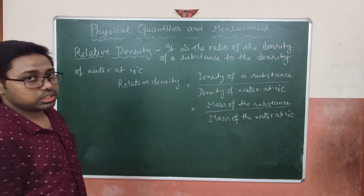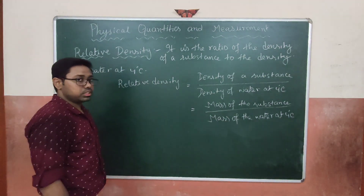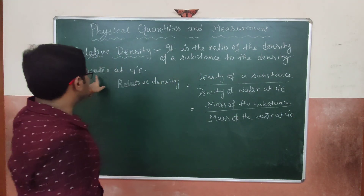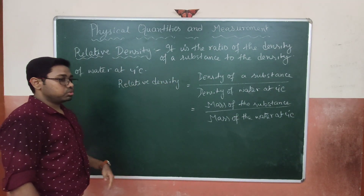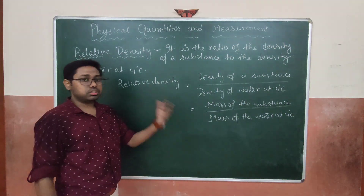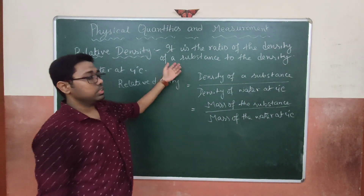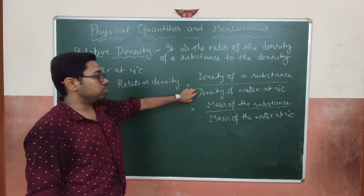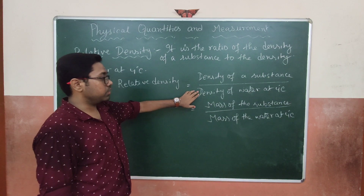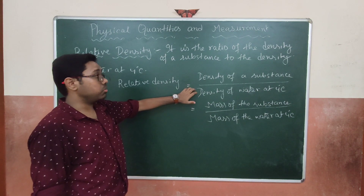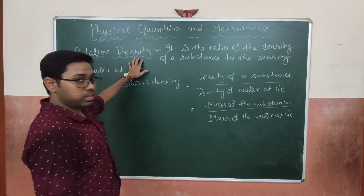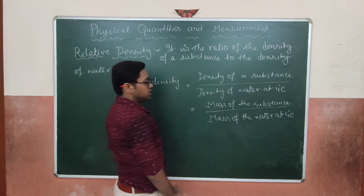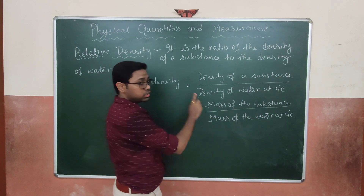Relative density is the ratio of the density of a substance to the density of water at 4°C. First, find the density of the object, then divide it by the density of water at 4°C, which is maximum at that temperature. There are two formulas: one using density and another using mass.